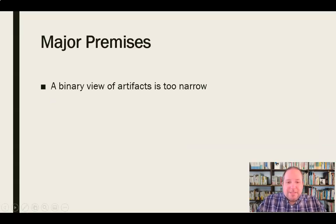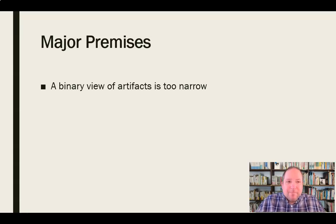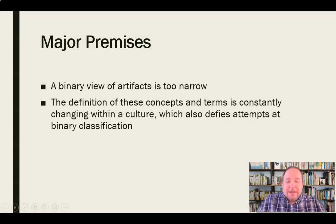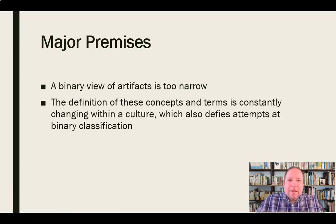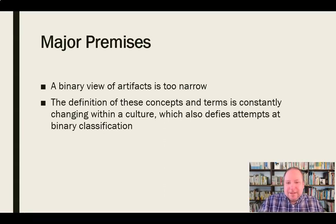The major premises of gender studies criticism: a binary view of artifacts is too narrow — there's more to this than just masculine versus feminine. Also, the definition of those concepts — masculine and feminine and terms along those lines — is constantly changing within a culture, which defies attempts at binary classification. What we consider masculine and feminine today is different from 50 years ago.